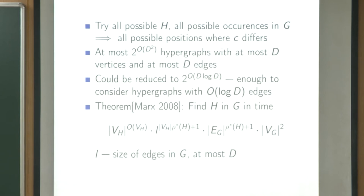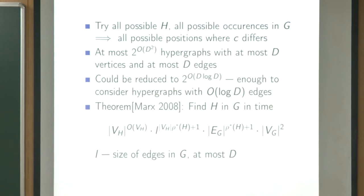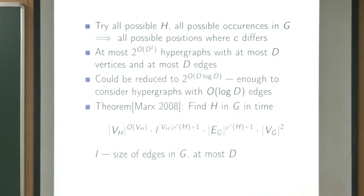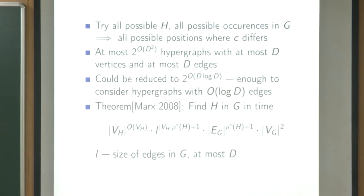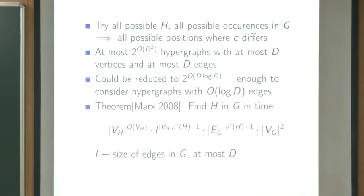The idea is to try all possible sub-hypergraphs H of this form and find them in G. We use a theorem that if the fractional hyperedge cover number of H is small, we can do this in sufficiently fast time — essentially D^D. So our general strategy is: try all possible H, find them using this theorem. This gives the desired runtime if we can prove the fractional hyperedge cover number of H is at most 2.